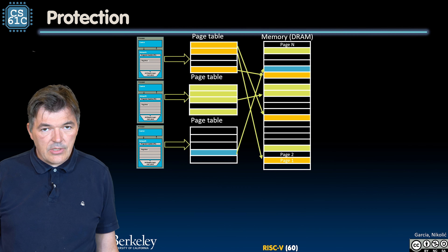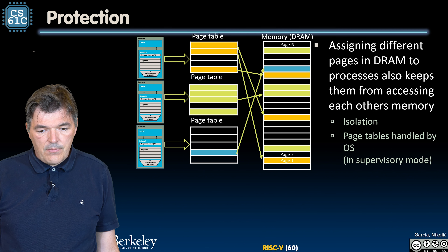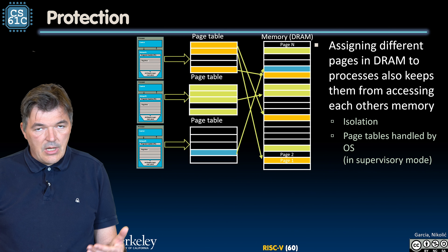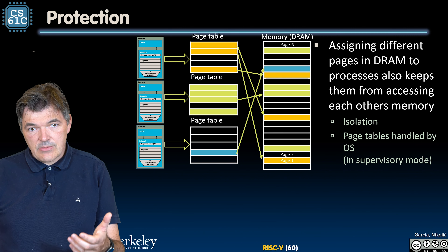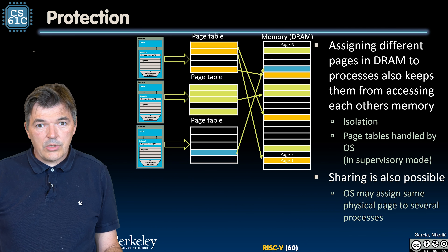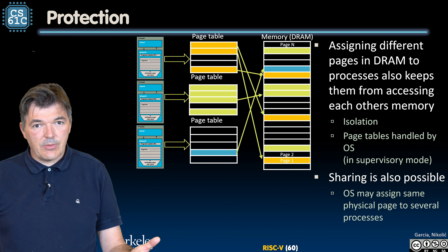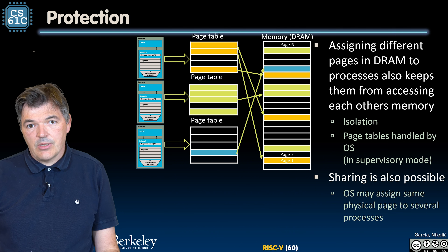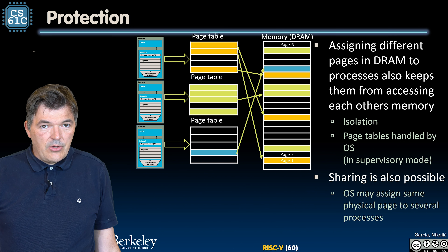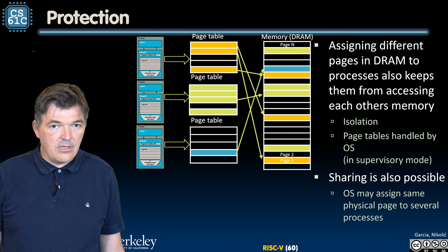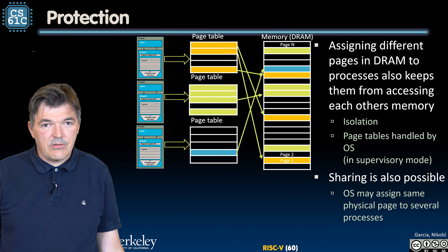Now let's look at the second role of the memory manager: protection. Assigning different pages in DRAM to different processes keeps them from accessing each other's memory, allowing processes to be isolated. Page tables are managed by the OS in supervisory mode, not by the processes themselves. If we need to share data between multiple processes, a bit in the page table flags a page as shareable, and the OS assigns the same physical page to two different virtual addresses in two different processes.